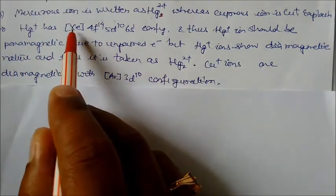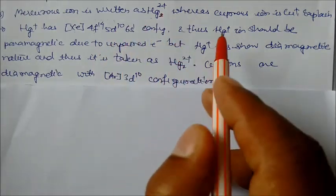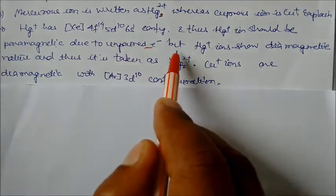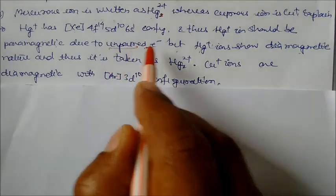Thus Hg+ should be paramagnetic due to the unpaired electron. But Hg+ shows diamagnetic behavior because it is taken as Hg2²⁺.